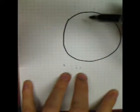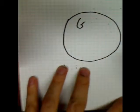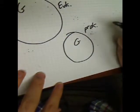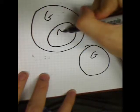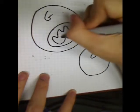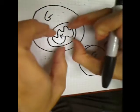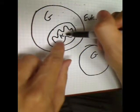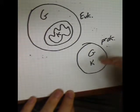In a cell, whether prokaryotic or eukaryotic, glycolysis just happens in the cytoplasm. In a eukaryotic cell, the Krebs cycle happens inside the mitochondrion. In a prokaryotic cell — a bacterium or an archaean — the Krebs cycle happens right there in the cytoplasm.